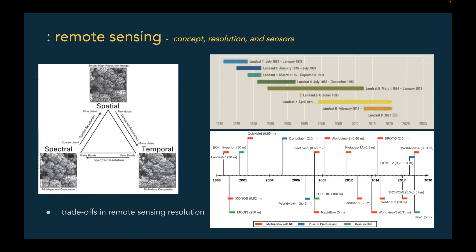We have to pick one resolution over another. If you decide on imagery with high spatial resolution — for example, PlanetScope — you will have to sacrifice spectral resolution. Sensors that collect images in high spatial resolution will typically have lower spectral resolution, meaning fewer bands, and lower temporal resolution, meaning less frequent revisits. On the other hand, sensors with high temporal resolution will typically have lower spatial and spectral resolution than sensors that collect data at low temporal resolution.